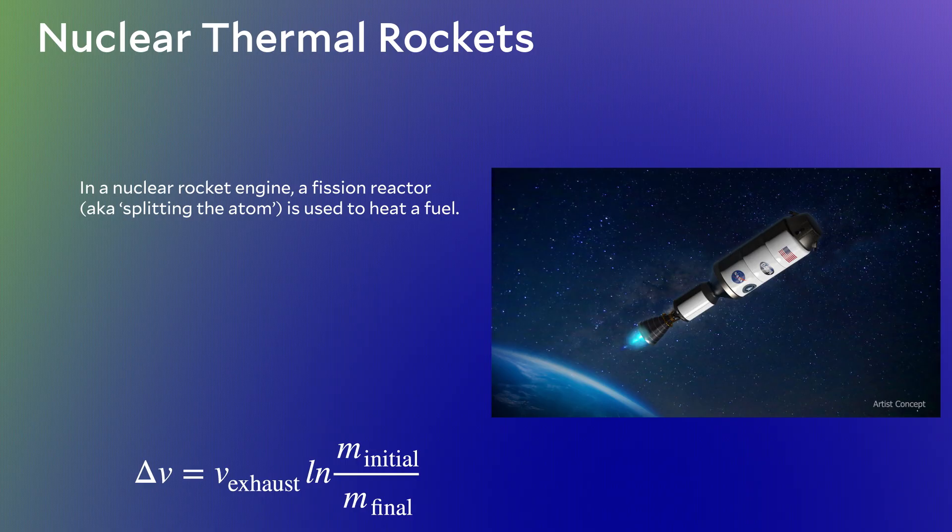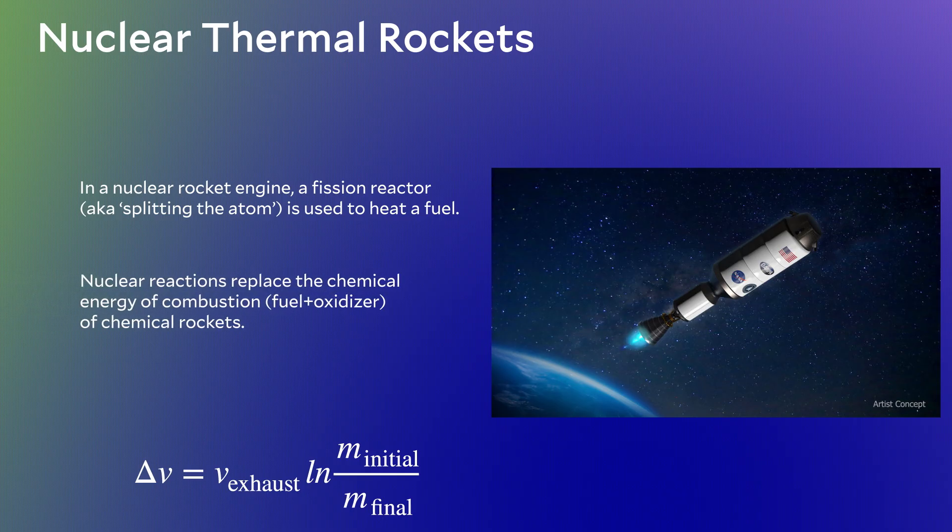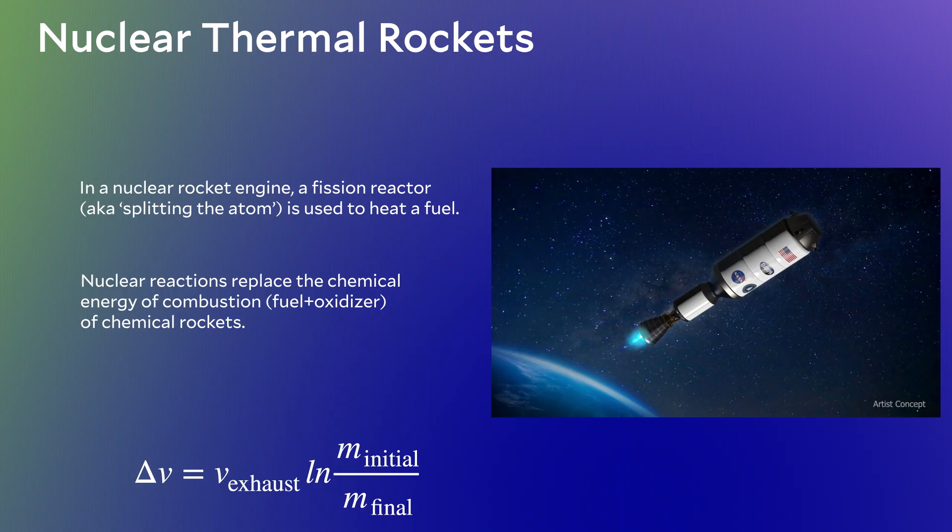When uranium is bombarded, it can split, creating a lot of energy. That's splitting the atom. But for nuclear-powered rockets, you still need a way to create exhaust. So these rockets still have a fuel source, like liquid hydrogen, which is superheated by the nuclear reactions. Similar to chemical rockets, the actual propulsion comes from sending a superheated gas quickly out the back of a rocket.